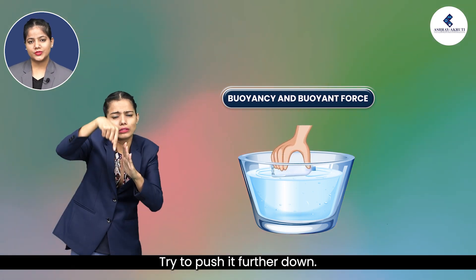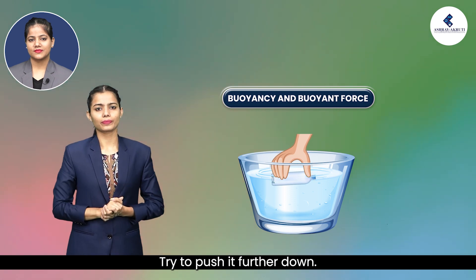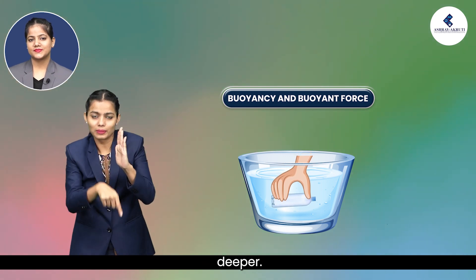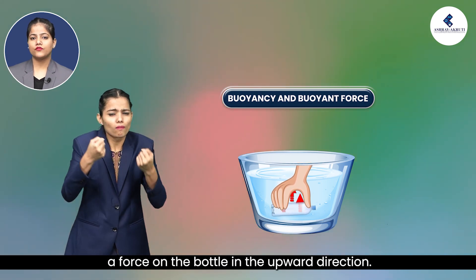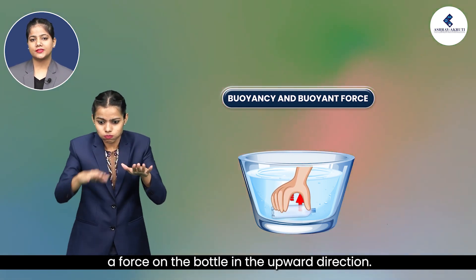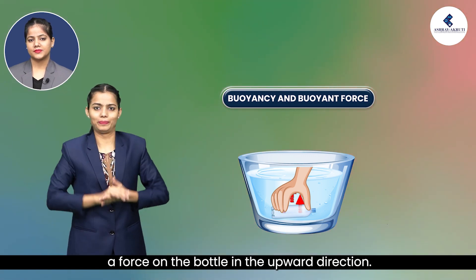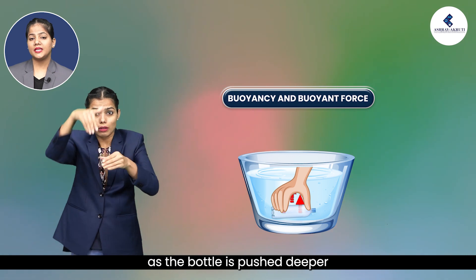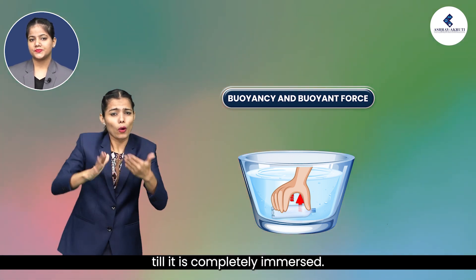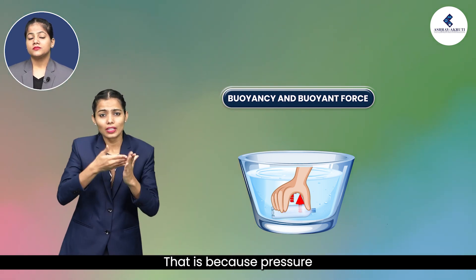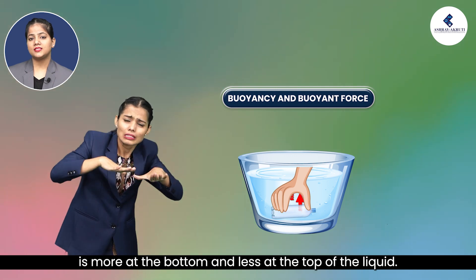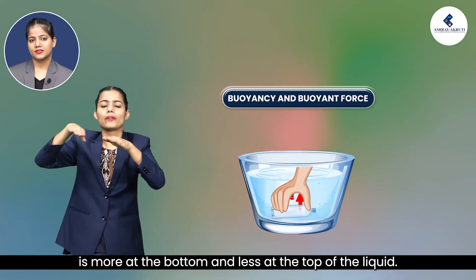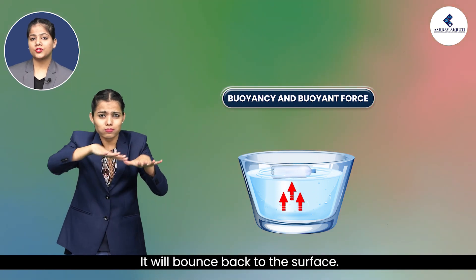Push the bottle into the water — you feel an upward push. Try to push it further down and you will find it difficult to push it deeper and deeper. This indicates that water exerts a force on the bottle in the upward direction. The upward force exerted by the water goes on increasing as the bottle is pushed deeper, until it is completely immersed, because pressure is more at the bottom and less at the top of the liquid. Now release the bottle — it will bounce back to the surface.